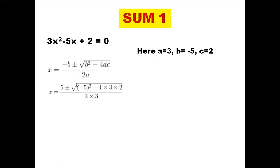Now let us substitute the values. What is b here? It is -5. So minus multiplied with -5 becomes +5. You can write minus and then (-5) in the bracket, plus or minus: b² is (-5)², minus 4 times a times c. a is 3 and c is 2, so 4 multiplied with 3 multiplied with 2. Divided by 2a — a is 3, so 2a is 6. The coefficient of x² is 3.